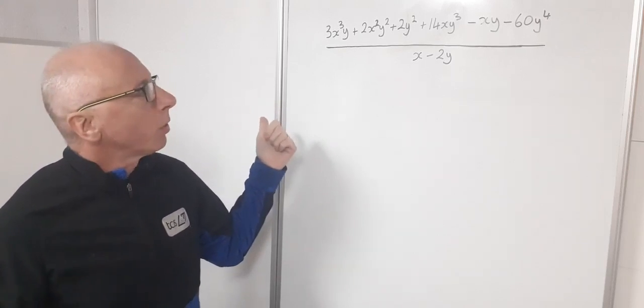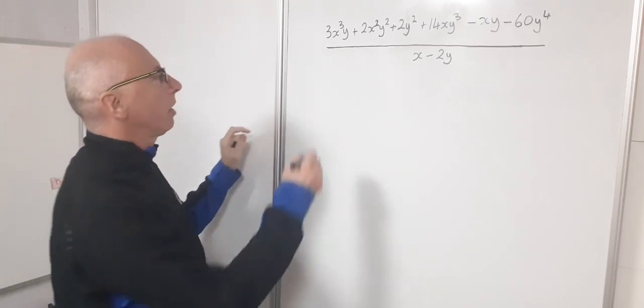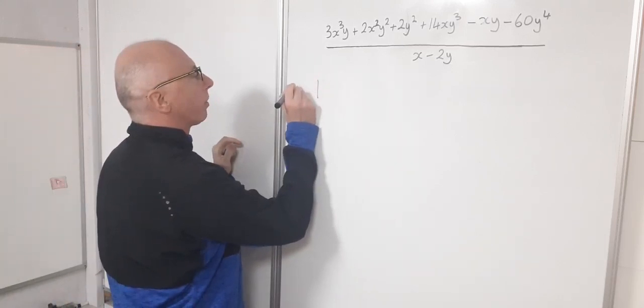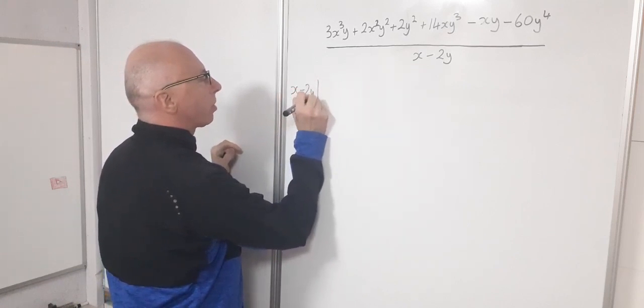When we're doing long division we normally do what's called a bus stop situation. So I'll set that up here and show you how to do it. The denominator always goes outside, so x minus 2y goes there.